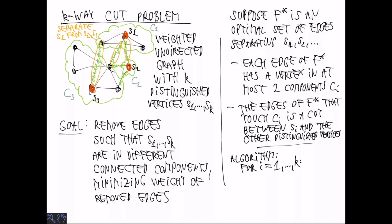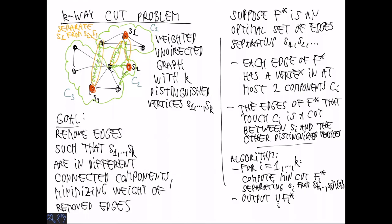This suggests the following algorithm. For i equals 1 to k, we compute a min-cut that separates SI from the other distinguished vertices. This can be done in polynomial time. Finally, we output the union of all the cuts. I would like you to pause and think: why does this give an algorithm that is a 2-approximation to the optimum?